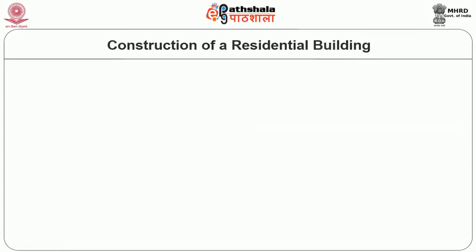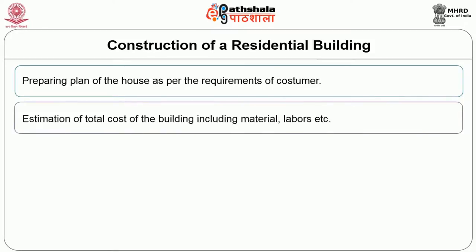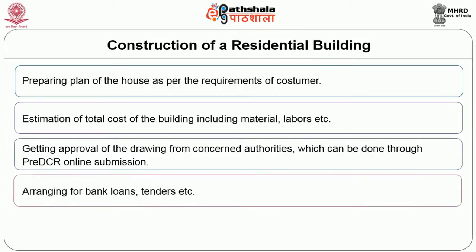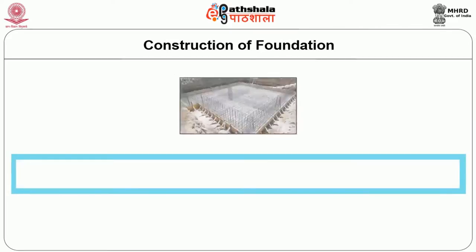Financial commitments may be taken through bank loans also. Now let us take a case study on the construction of a residential building. First is the paper works — we have to do the paper works before the start of actual construction. This includes preparing the plan of the house as per the requirement of the customer, estimation of the total cost including material and labor, getting approval of the drawing from concerned authorities through pre-DCR online submission, arranging for bank loans and tenders, and setting up a team of laborers.